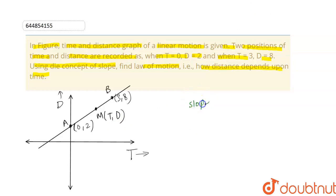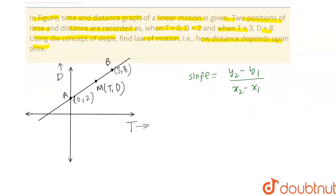Slope equals y₂ minus y₁ divided by x₂ minus x₁. Now using this, let's find the slope of AM. The slope of AM is given by: y₂ is d minus y₁ is 2, divided by x₂ is t minus x₁ is 0.